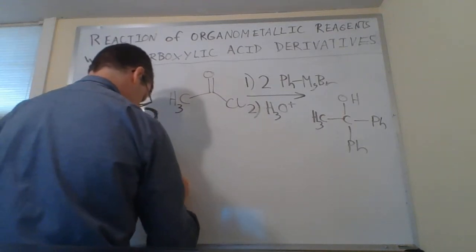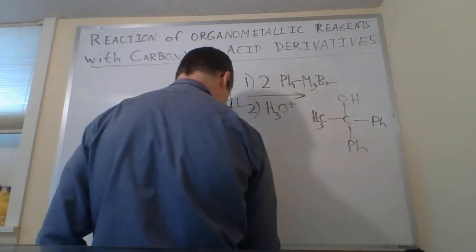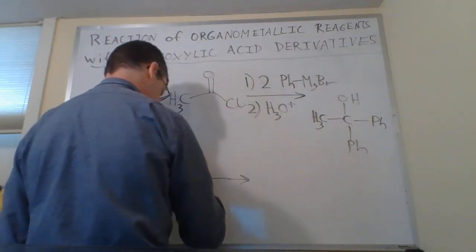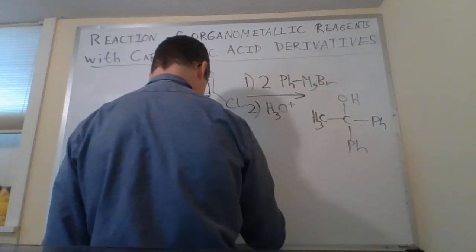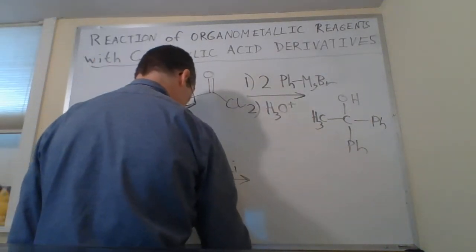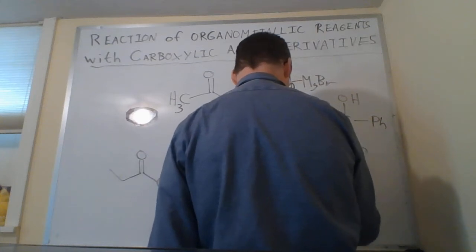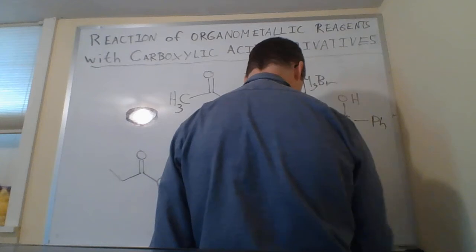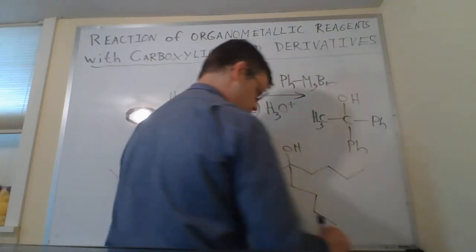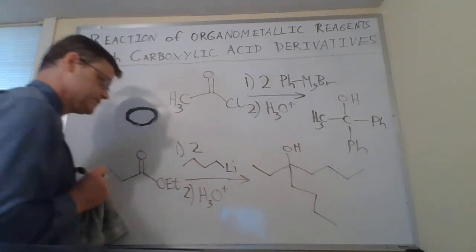We could also do this with an ester. Here I've got an ester and maybe in this case I'll use a lithium reagent. Maybe I'll use butylithium - so four carbons there - as a first step and then get some sort of workup. Again we're gonna get a tertiary alcohol, in this case with the butyl groups added. And I forgot something - we've got two equivalents of n-butylithium here, that's very important.